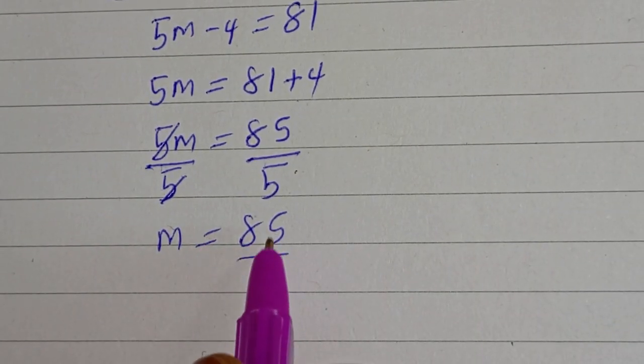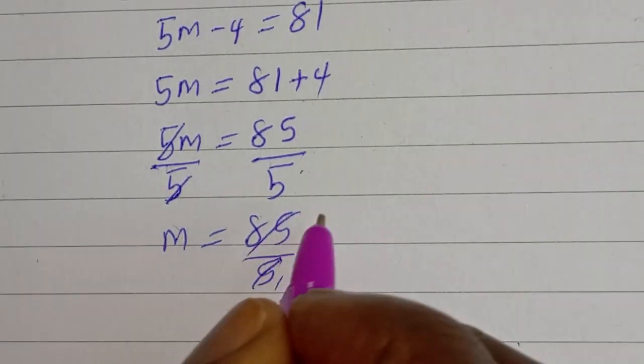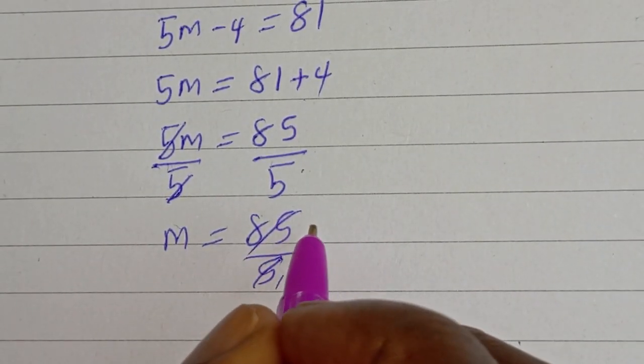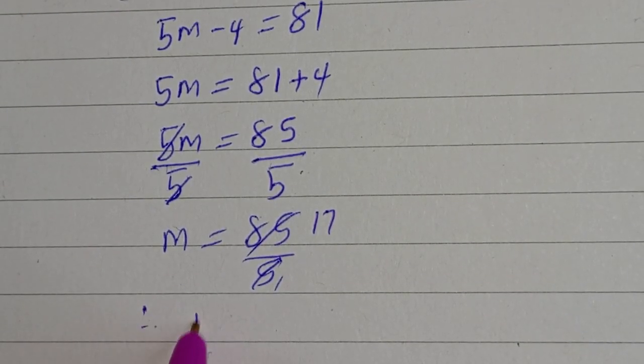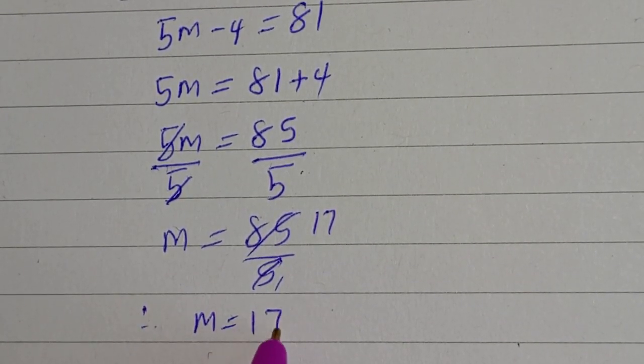M is equal to 85 over 5. 5 here 1, 5 here 17. Therefore, m is equal to 17.